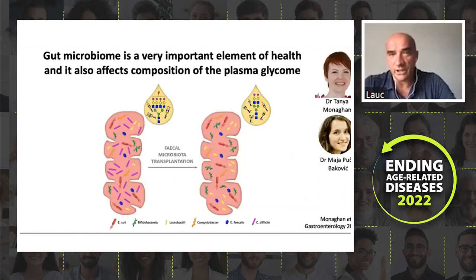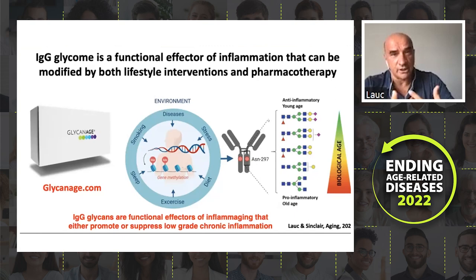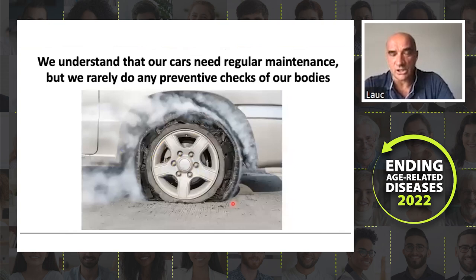Microbiome is also extremely important — we have papers showing that improving your microbiome also improves your glycome. To bring the story together: we have a test measuring 24 glycans attached to IgG, which are functional factors of inflammation. If your glycan age improves, your pro-inflammatory capacity of IgG is decreasing and you are less inflammatory. The idea is we don't have to wait until people actually get ill, because by then it's usually beyond the point of no return. If we just measure biomarkers early, lifestyle or preventive pharmacological interventions can return things to homeostasis. An analogy: imagine if we only changed tires on our cars when they explode on the highway — this is what we do to our bodies.